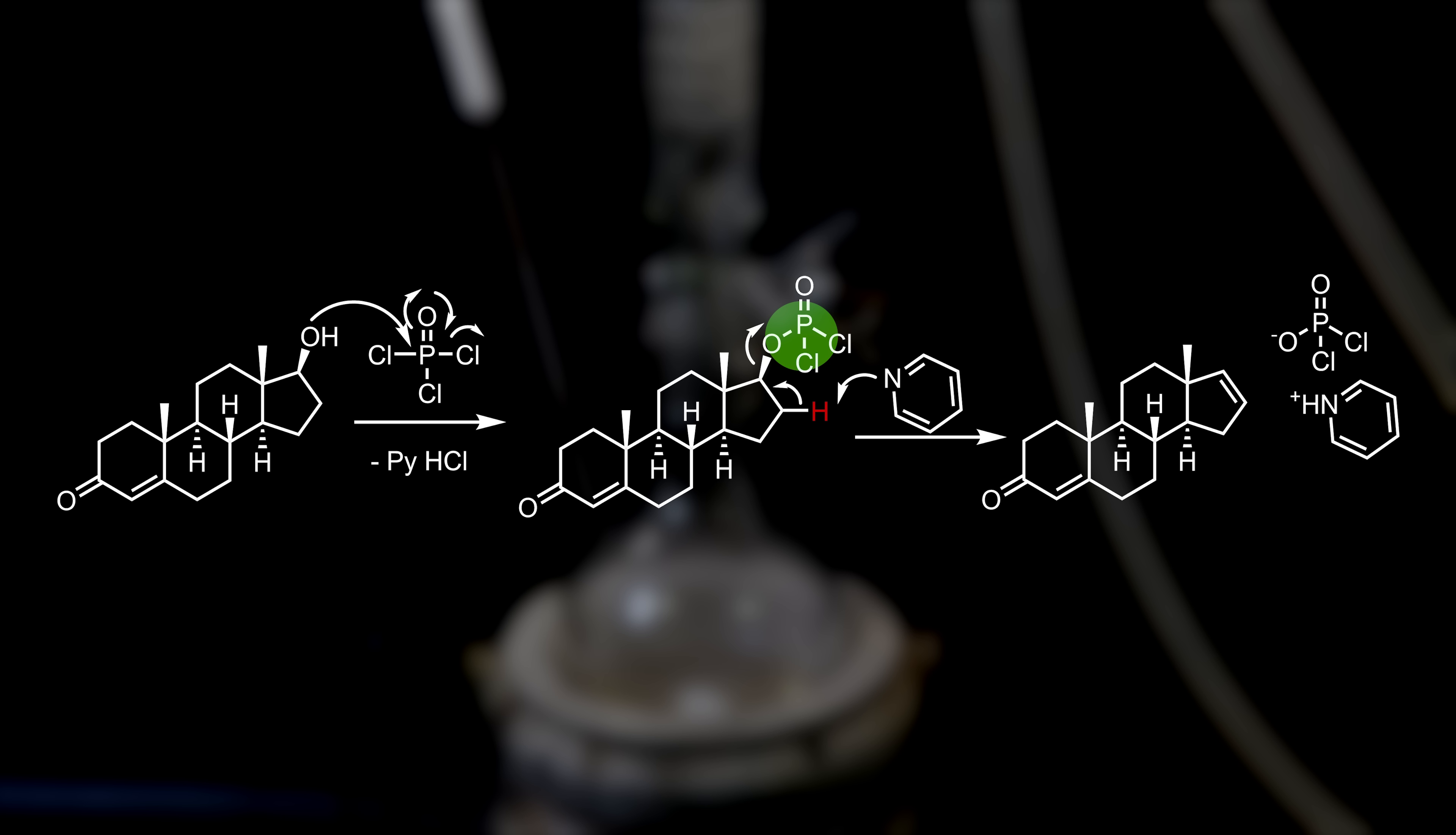The formed intermediate phosphoester, is a great leaving group, because of the two remaining chlorines that are attached. Because of that, the adjacent proton has a significant increase in acidity, allowing it to be deprotonated by the pyridine. Those bond electrons move to form a double bond, and the phosphoester is kicked off, to give the pyridinium dichlorophosphate salt, and the product androstadienone.